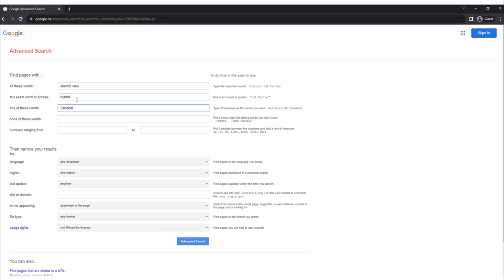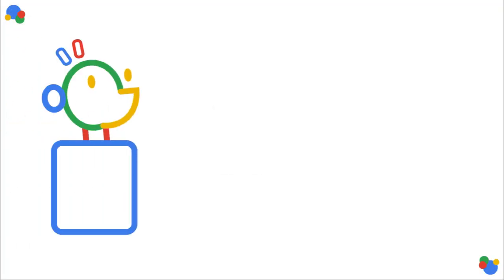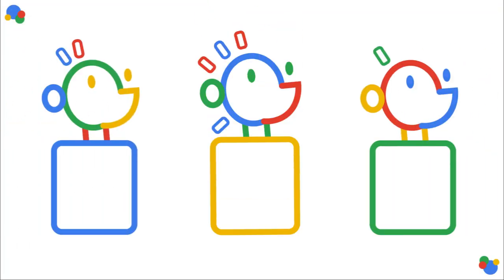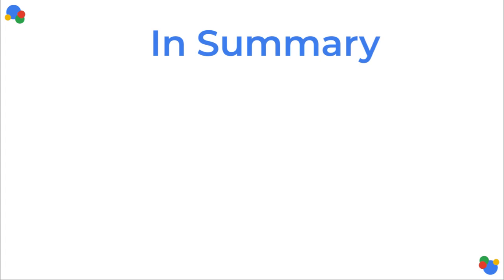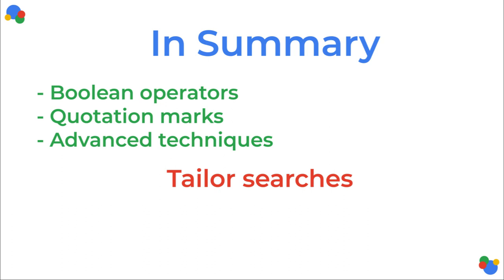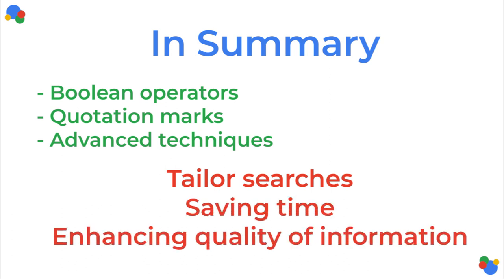Incorporating Google's advanced search operators into your search strategy empowers you to take control of the information retrieval process. Whether you are a researcher, a student, or simply someone looking for specific information, mastering the use of Boolean operators, quotation marks, and other advanced techniques can help you tailor your searches to meet your specific needs, ultimately saving time and enhancing the quality of the information you discover.